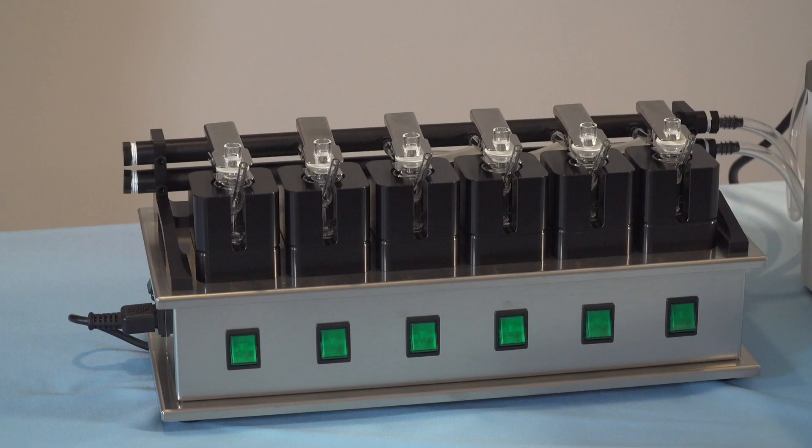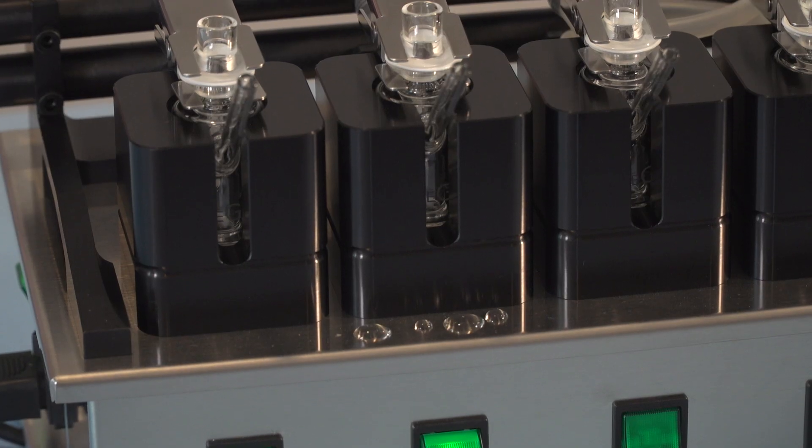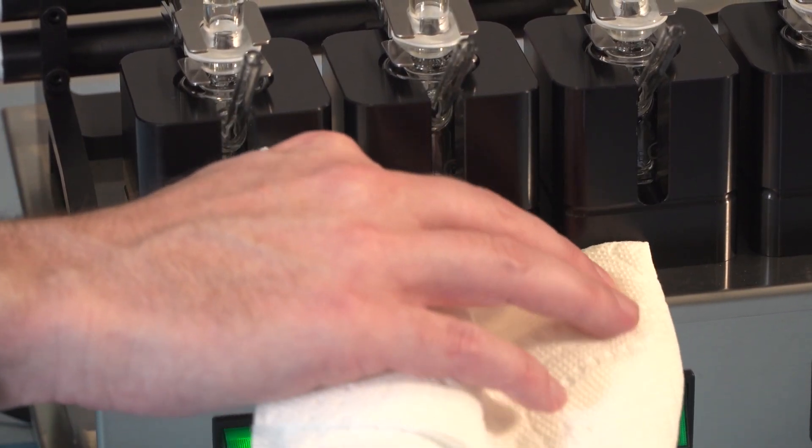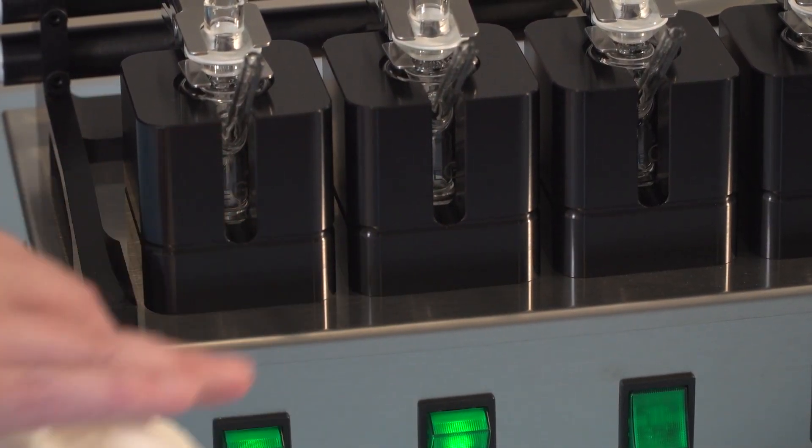It is recommended to turn the V-series stirrers off when a test is not running. The V-series stirrers can easily be cleaned by wiping up any spills. It is recommended that any corrosive spills be cleaned up immediately.